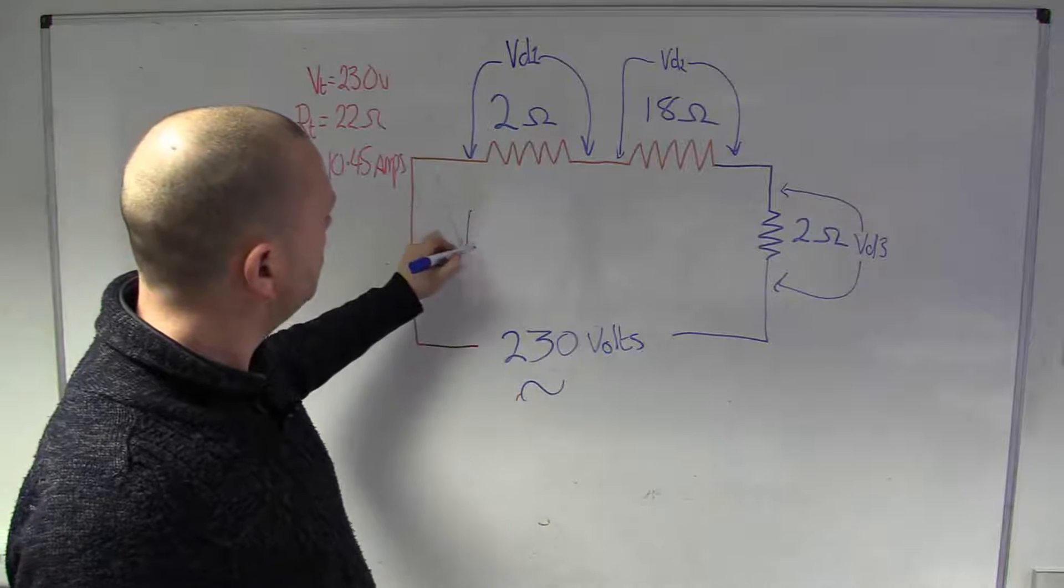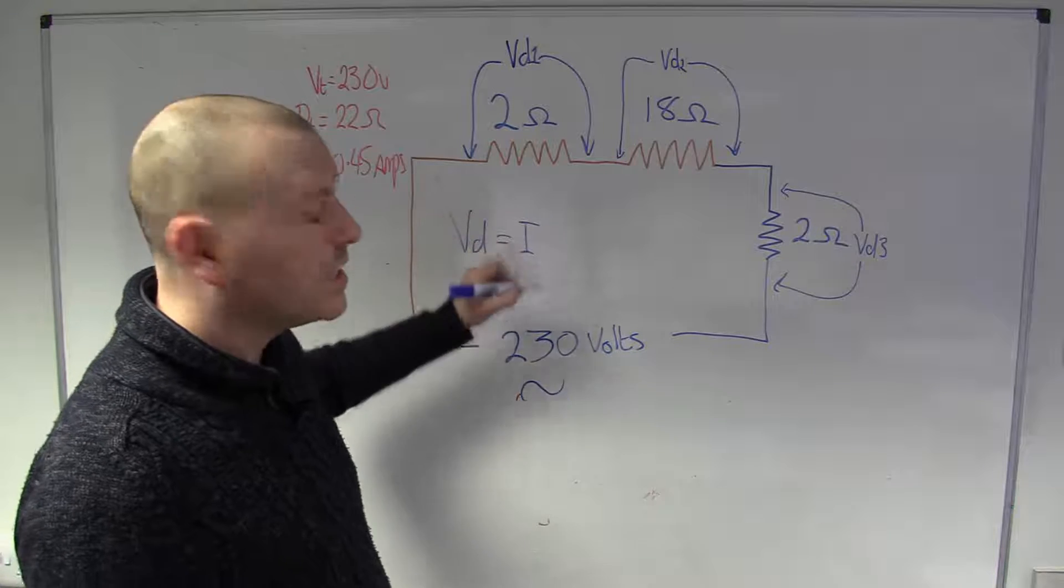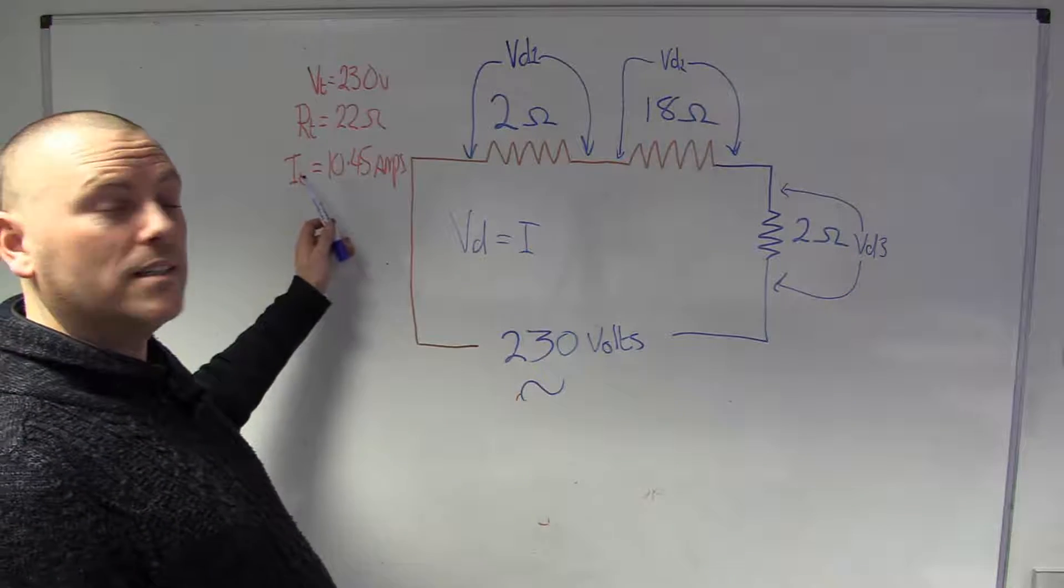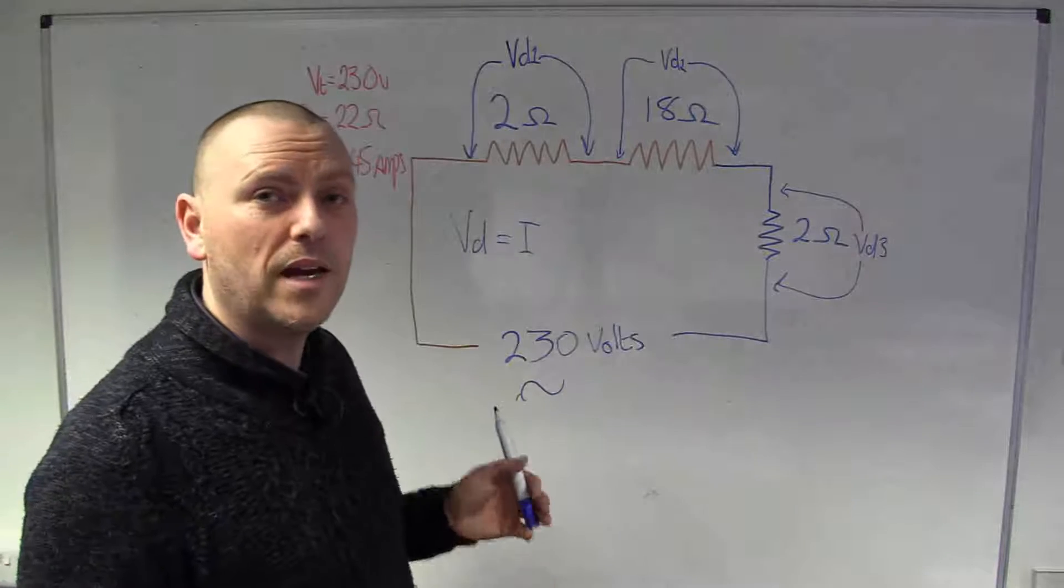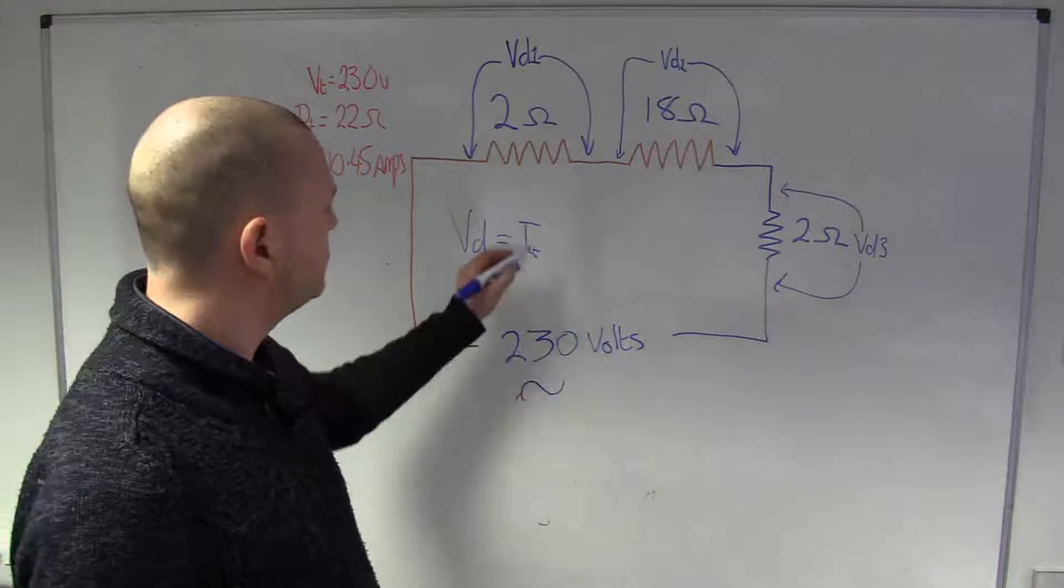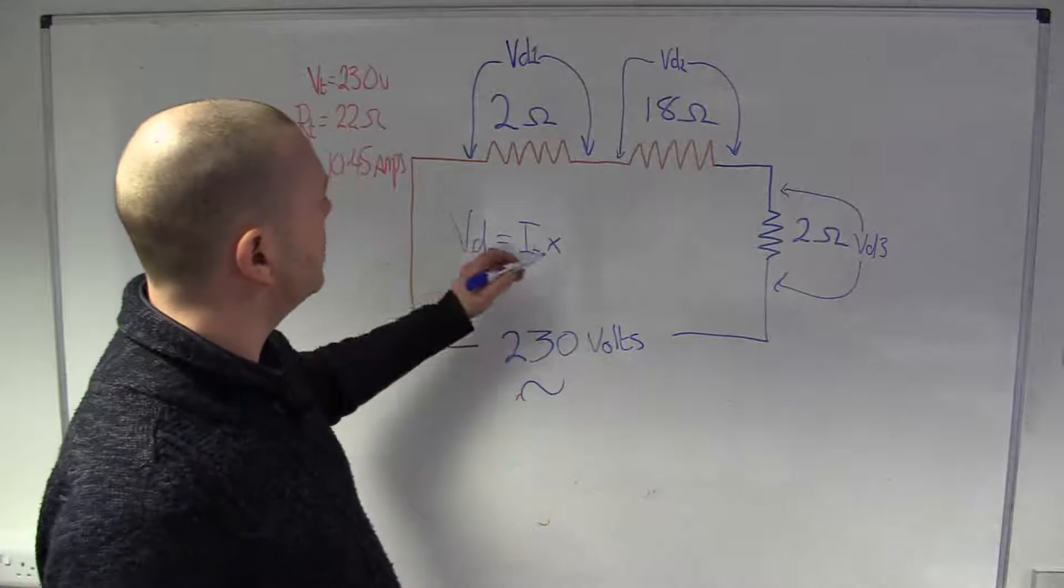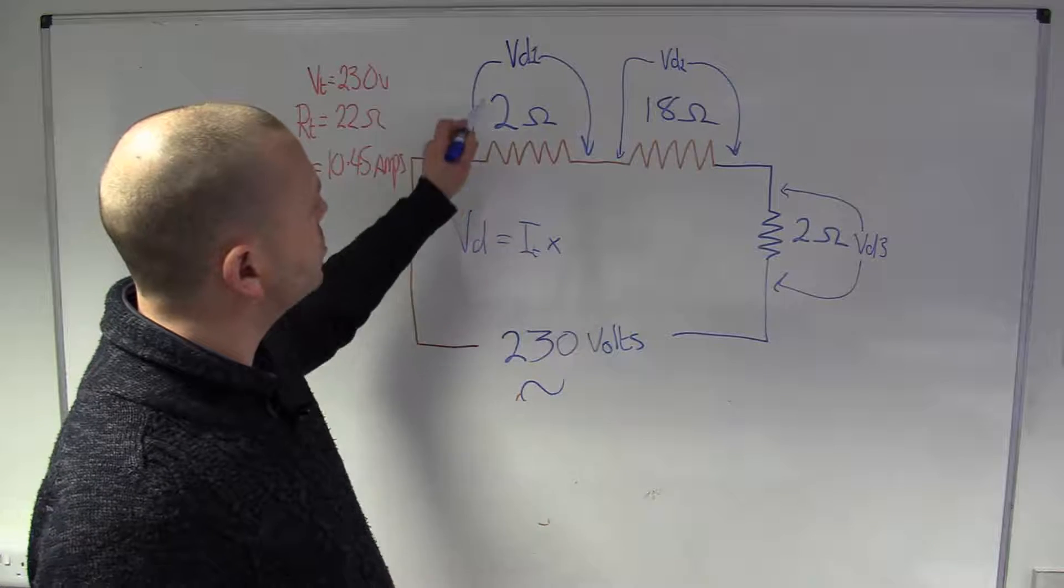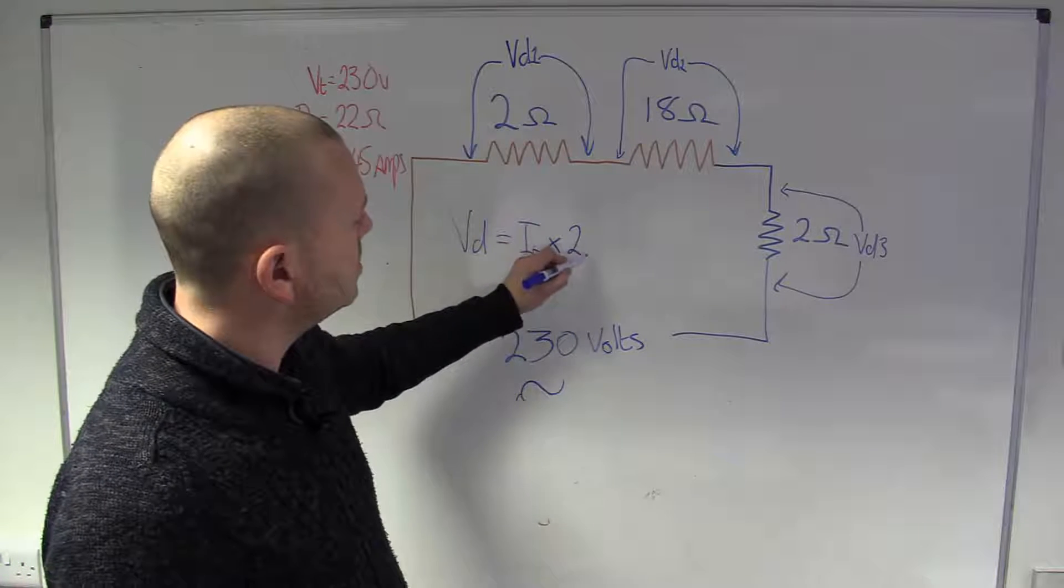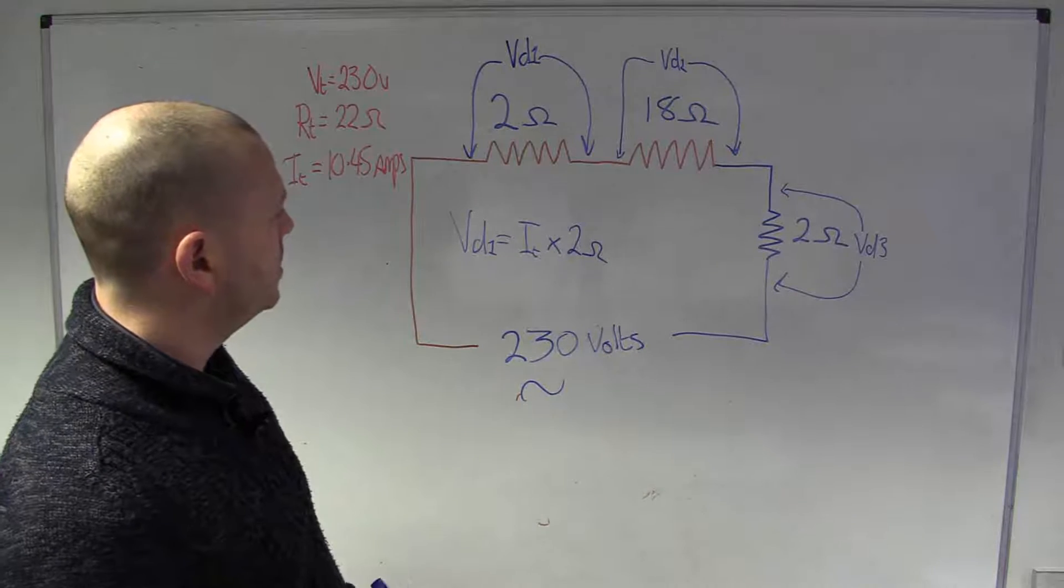So, the equation is simply the current, and in this case, because it's a series circuit, this current, the IT, it's got nowhere else to go. So, it's going to be the same everywhere. So, we call it IT, the total current. Times by the thing we're trying to look at. So, in this case, we want to know the volt drop over this resistor. And so, in this case, it will be our 2 Ohm resistor. And that will give us a volt drop across this point here.